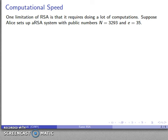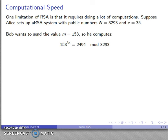For example, let's say Alice sets up her RSA system using the public numbers N = 3293 and public exponent e = 35. Now, Bob wants to send her the value m = 153, so he computes 153 to power 35 and finds 2494 is the number to send.